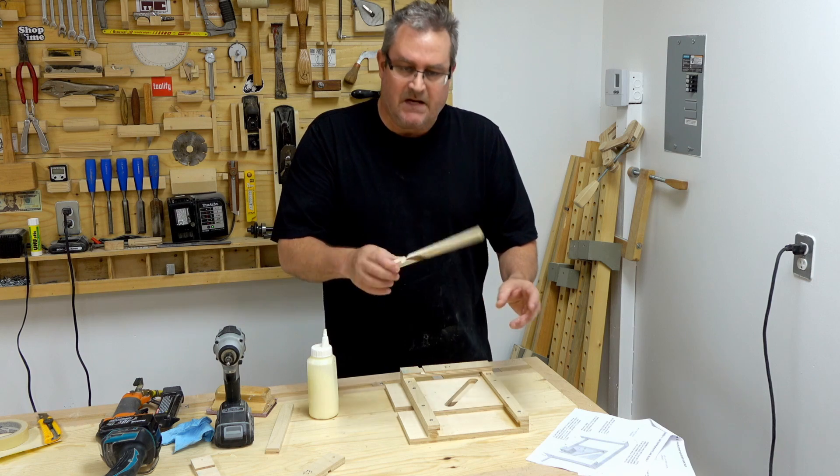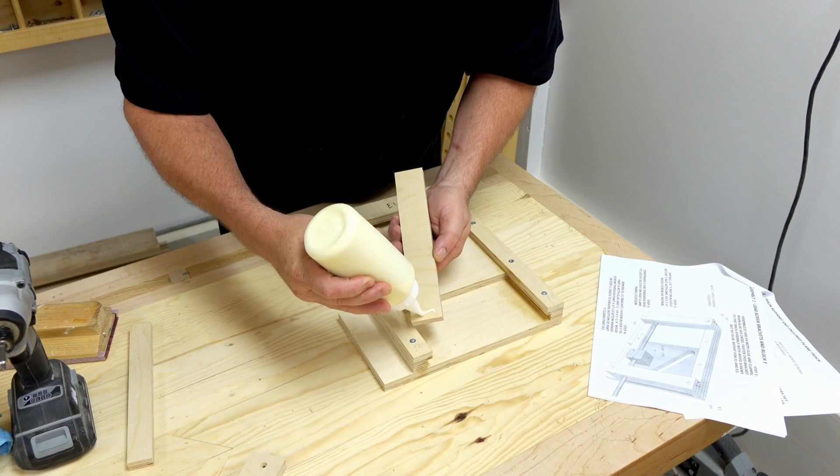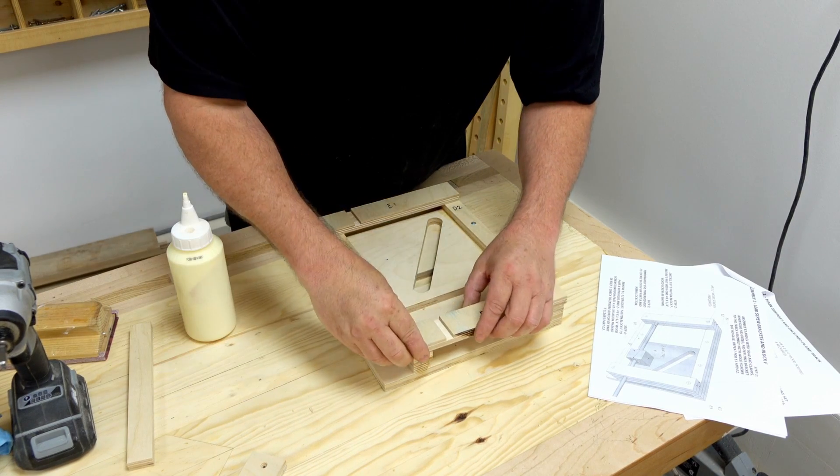Next I'm going to fasten parts E1 and E3 to D1 and D2 like so. I'm just going to use glue on these and then fire in a couple of pins to clamp them while the glue sets.